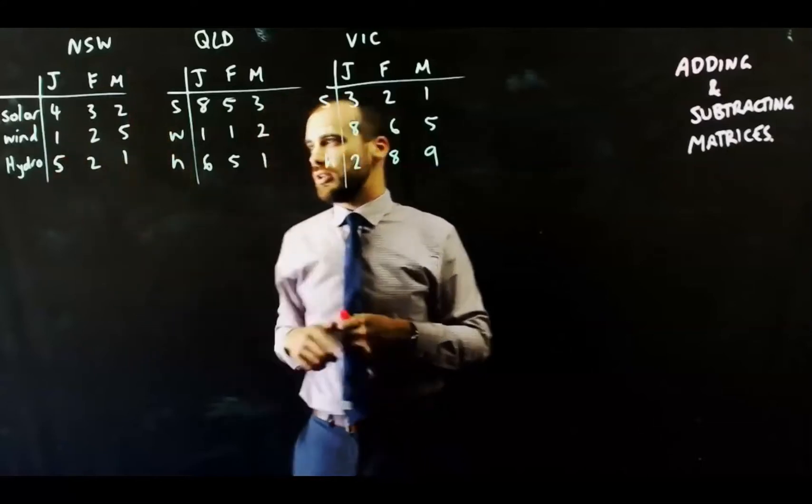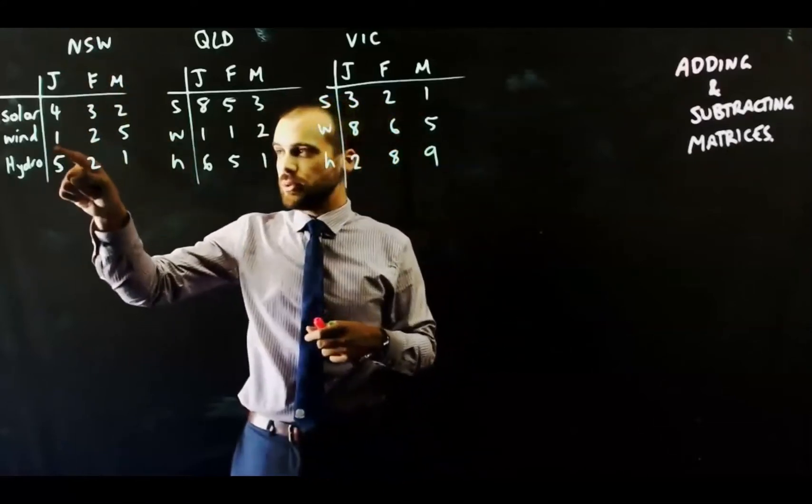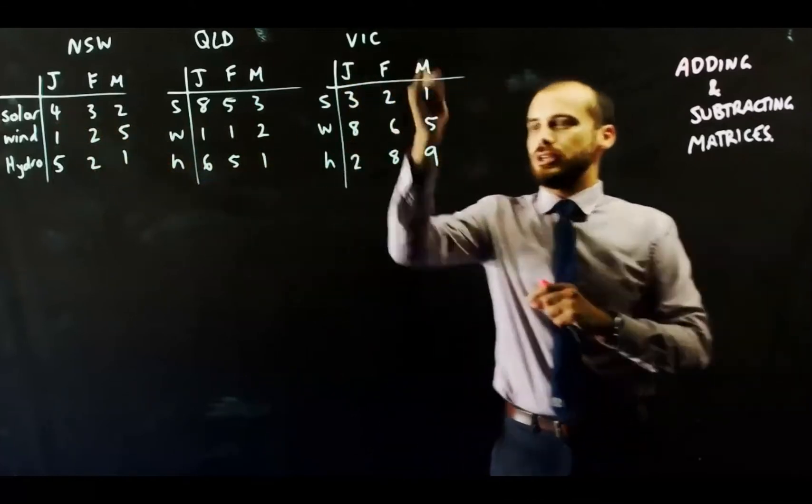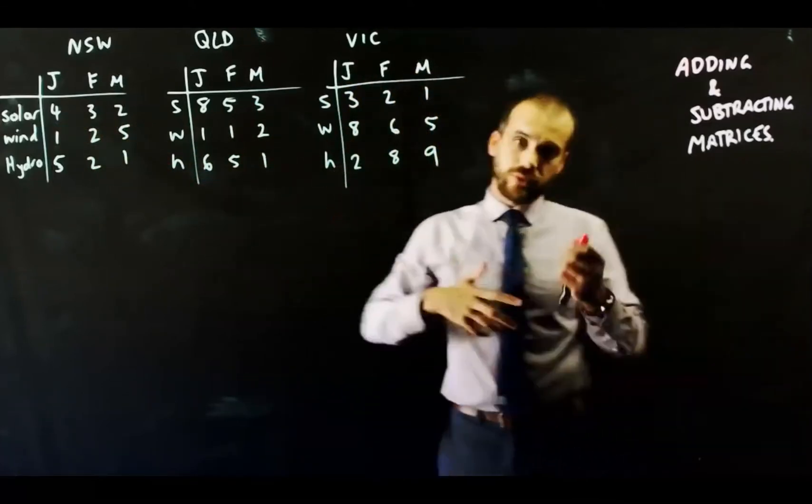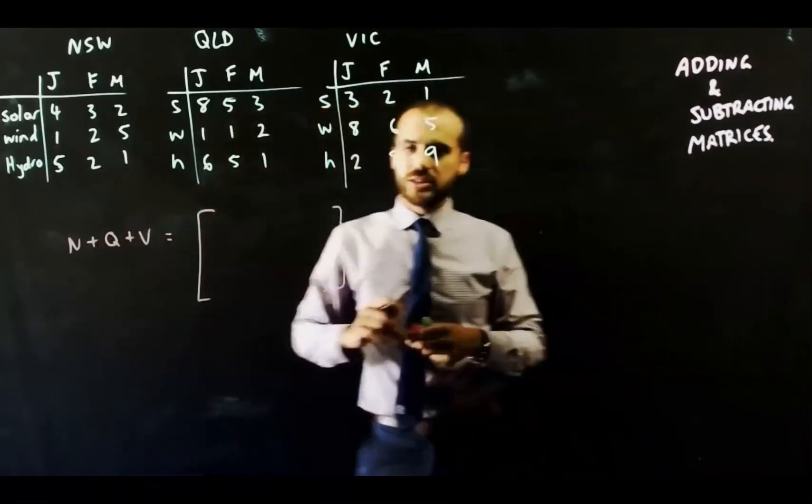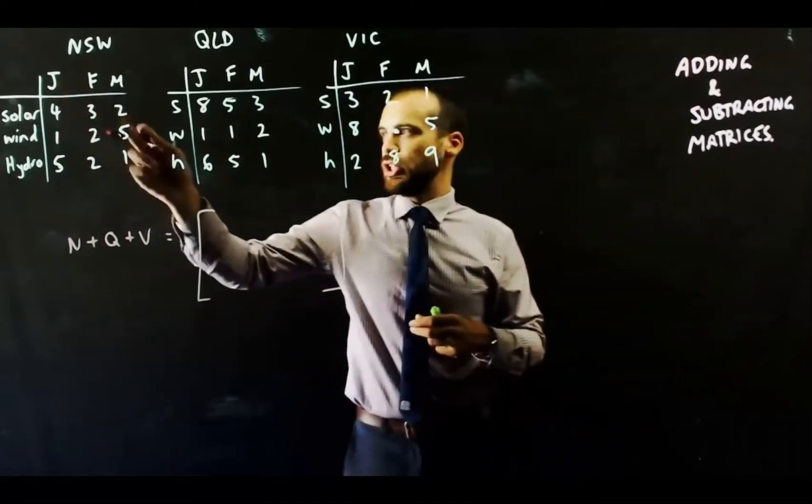And now, if you add these three matrices together, you'd be finding out how many units of solar power New South Wales, Queensland, and Victoria did combined in January.